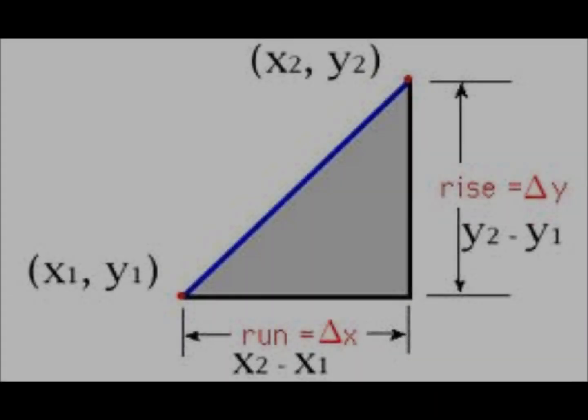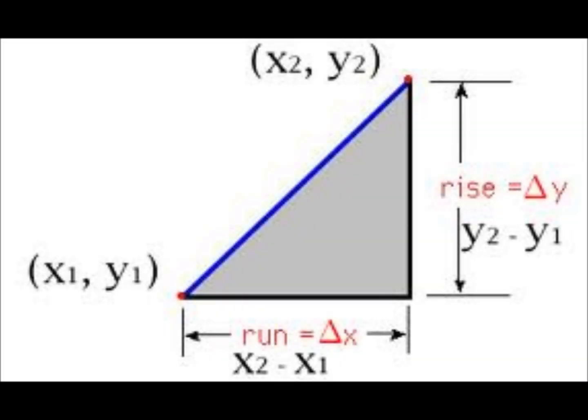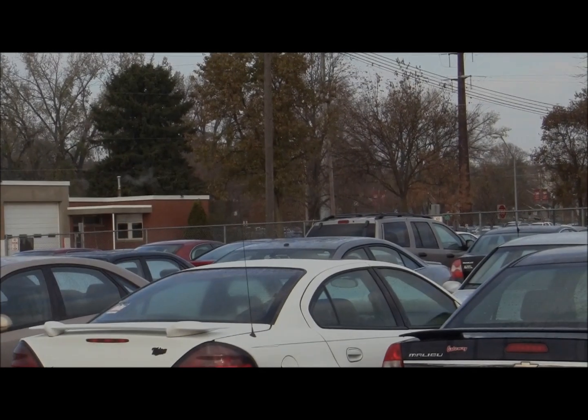Hello everyone, my name is Alex Vossi and I'm going to talk to you about rates of change. Known also as slope, rate of change is defined as rise — the second y coordinate minus the first y coordinate — divided by run — the second x coordinate minus the first x coordinate.